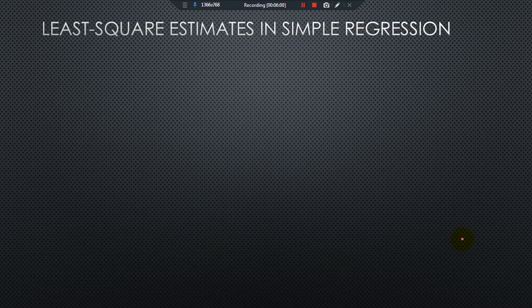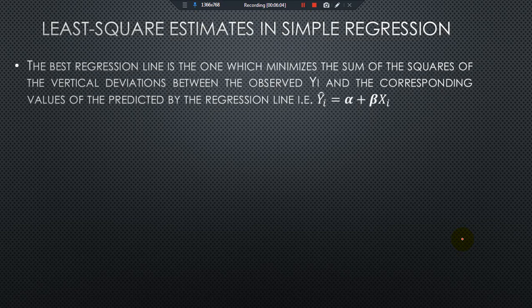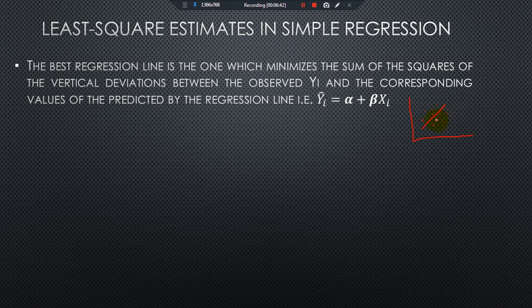For least squares estimation in simple regression, the best regression line is the one that minimizes the sum of squares of the vertical deviations between the observed y values and the corresponding values of the predicted or estimated regression line. Keep in mind that if we have an estimated regression line and actual data points, these vertical distances should be minimized. When they are minimized, we can say our regression line is a good fit. So for the best regression line, the vertical distance between the observed and estimated regression line should be minimum.